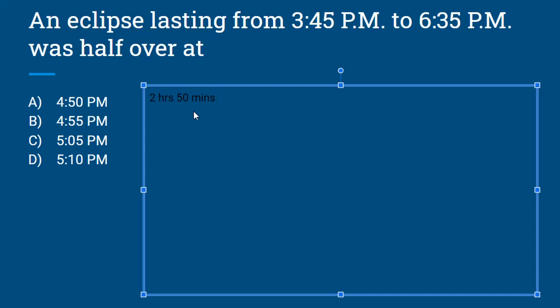That would be 1 hour and 25 minutes. Now we want to add that to 3:45, and that would be 4:70. We know there's only 60 minutes in an hour, so we want to simplify that, and that would be 5:10 PM. So our answer would be D.